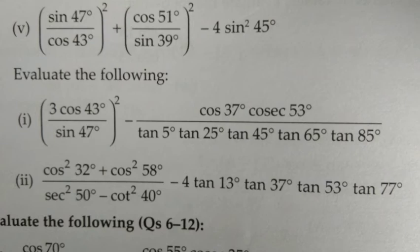For question number 5, parts 1 and 2, we'll also solve using complementary angles. For the denominator with tan 5°, 25°, 45°, 65°, 85°, these angles form complementary pairs that cancel out.